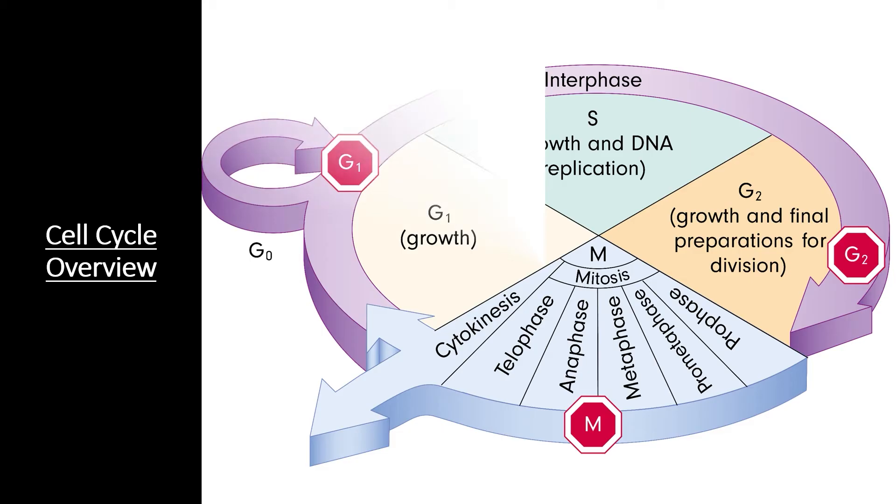Let's take a broad look at an overview of what the cell cycle is. Essentially, every cell must grow, replicate its DNA, and divide into two new cells. This cell cycle is broken into two parts: interphase and mitosis or cell division.